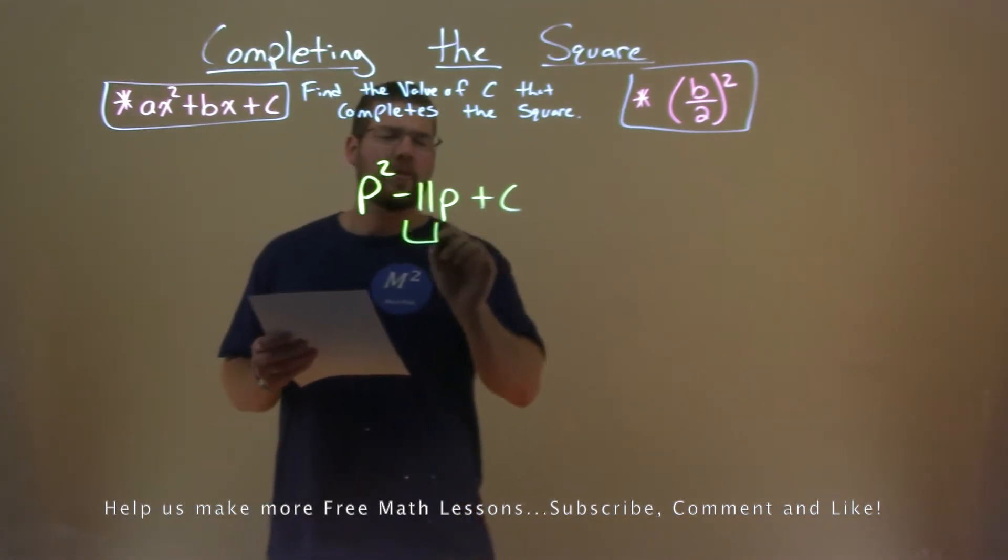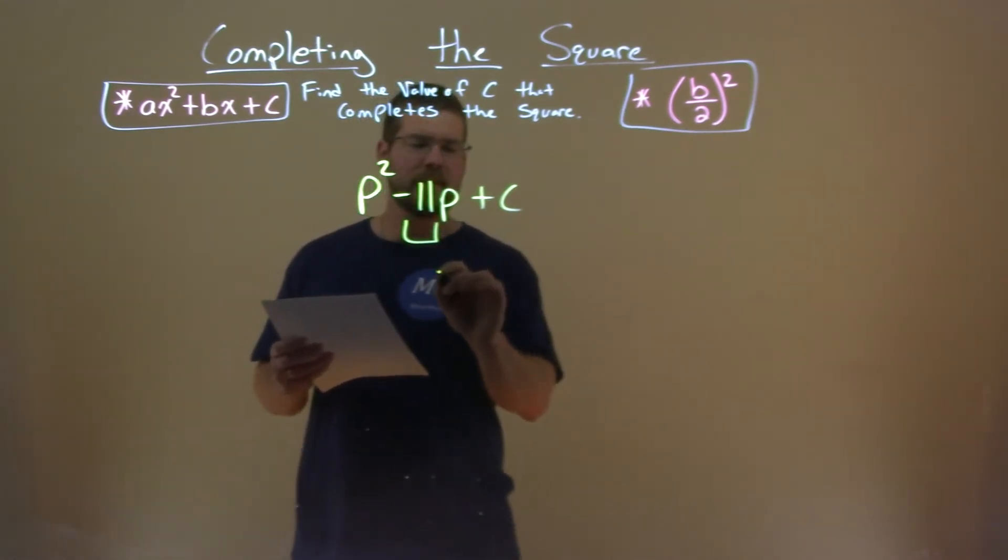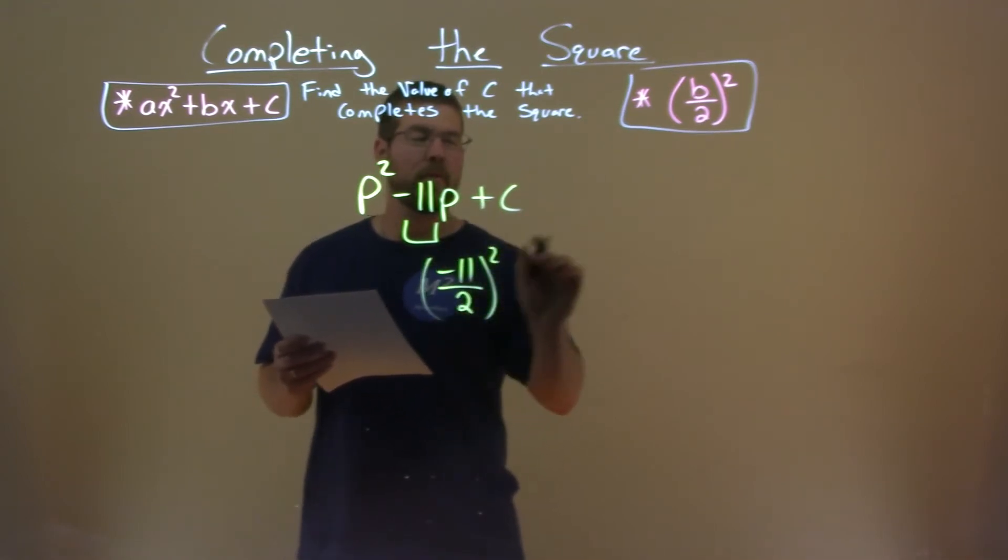I have to first look at my b value, negative 11. We take that b value, negative 11, divide that by 2, and we're going to square it.